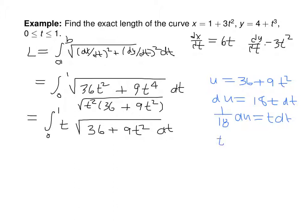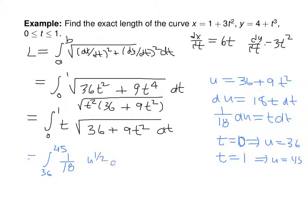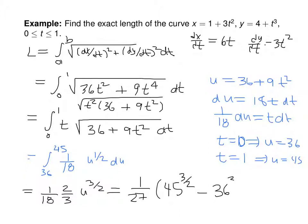Using substitution: let u = 36 + 9t², so du = 18t dt, meaning (1/18)du = t dt. When t = 0, u = 36; when t = 1, u = 45. The integral becomes (1/18)∫₃₆⁴⁵ u^(1/2) du = (1/18) · (2/3)u^(3/2) evaluated from 36 to 45 = (1/27)(45^(3/2) − 36^(3/2)). On your final you'll likely just be asked to set up the integral, not solve it.